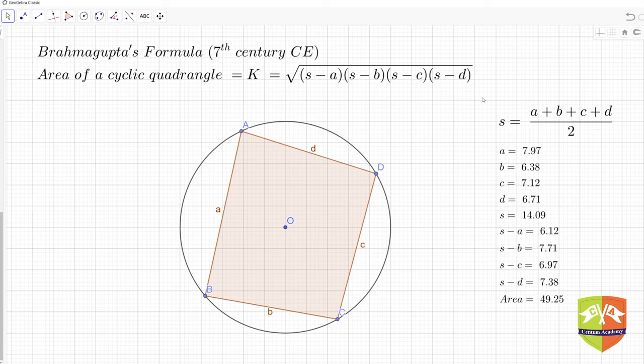Many of you would have heard of Heron's formula given by Hero of Alexandria around 2nd century AD. Five centuries later, Brahmagupta came up with his own formula for cyclic quadrilaterals. Heron's formula becomes a special case of Brahmagupta's formula - if you reduce one of the four sides to zero, it reduces to Heron's formula.